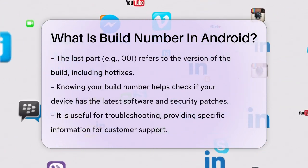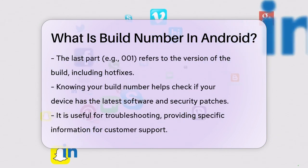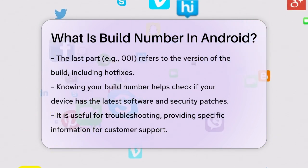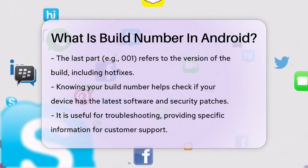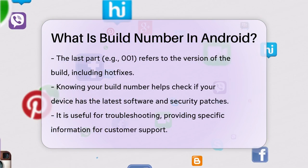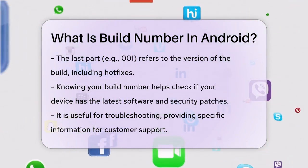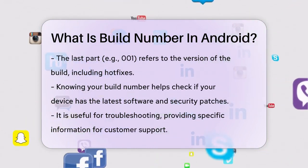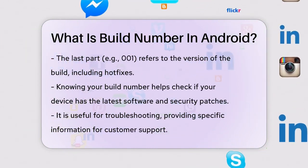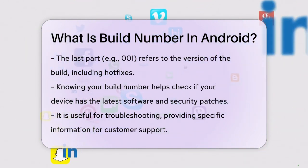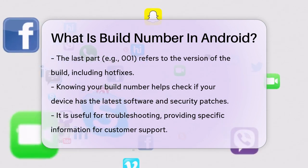Knowing your Android build number is important because it helps you determine if your device is running the latest software and if it has all the latest security patches. It also aids in troubleshooting, as it provides specific information that customer support can use to give you accurate solutions.